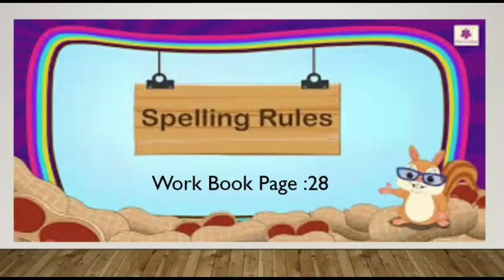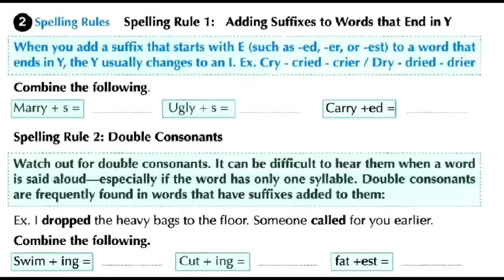Now, my dear students, on workbook page 28, we are going to study some spelling rules. Here is Spelling Rule One: adding suffixes to words that end in the letter Y. When you add a suffix that starts with E — such as -ed, -er, or -est — to a word that ends in Y, the Y usually changes to I.